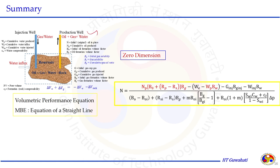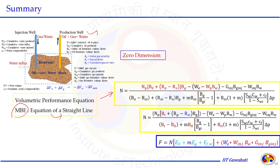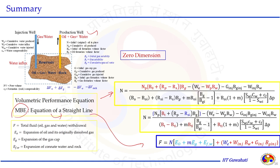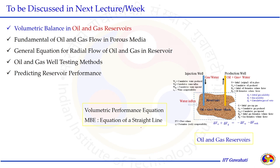In summary, today we discussed the general volumetric balance and developed the overall volumetric performance equation for a tank-model system with production and injection wells. The material balance equation can be represented as a straight line — this is the volumetric performance equation in straight-line form. It is a zero-dimension model. In the next class we will discuss how to utilize this general volumetric balance and the straight-line equation to evaluate different reservoirs classified as oil or gas reservoirs.